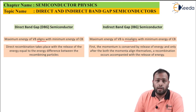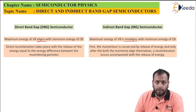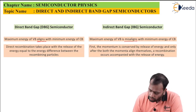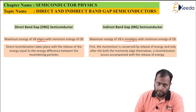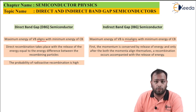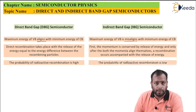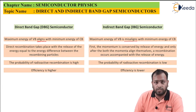If alignment is already present, the only energy released is the recombination energy. In an indirect band gap semiconductor, the first energy spent is in realignment — momentum is conserved by the release of energy, and only after both momenta align does the recombination energy get released. The probability of radiative recombination is high in a direct band gap semiconductor because alignment is already there, whereas in an indirect band gap semiconductor this probability is low. Consequently, efficiency is higher for direct band gap semiconductors and lower for indirect band gap semiconductors.